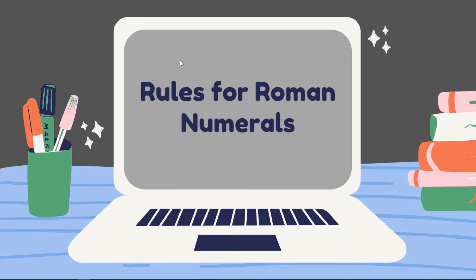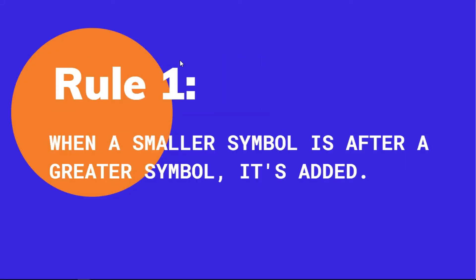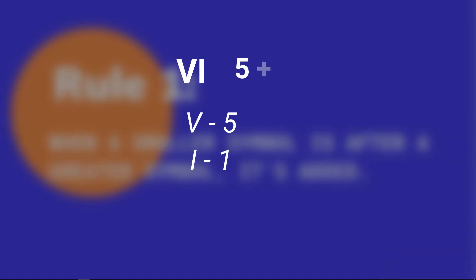The first rule says that when a smaller symbol is after a greater symbol, then it is added. For example, VI: V represents 5 and I represents 1. Since 5 is greater than 1 and 5 comes before 1, they will be added.